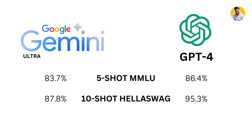When OpenAI's GPT-4 model and Google Gemini model were assessed on 5-shot prompting using the MMLU test, GPT-4 scored 86.4% compared to Gemini Ultra which scored 83.7%. And while using the 10-shot HellaSwag benchmark, a benchmark for commonsense reasoning, GPT-4 scored 95.3%, outperforming Gemini Ultra which scored only 87.8%.